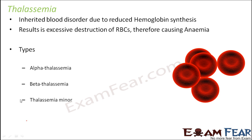Thalassemia minor is the least severe form. Sometimes a patient suffering from thalassemia minor doesn't show any symptom at all. Even if there are symptoms, they are just like minor anemia — lack of sufficient blood — for which no special medical treatments, blood transfusions, or transplants are needed. In terms of hemoglobin structure, thalassemia minor means there is only one affected beta gene; the rest of the alpha and beta chains are perfectly fine.